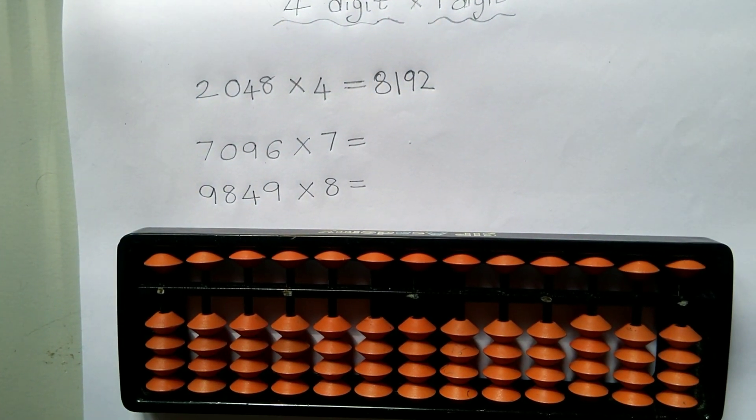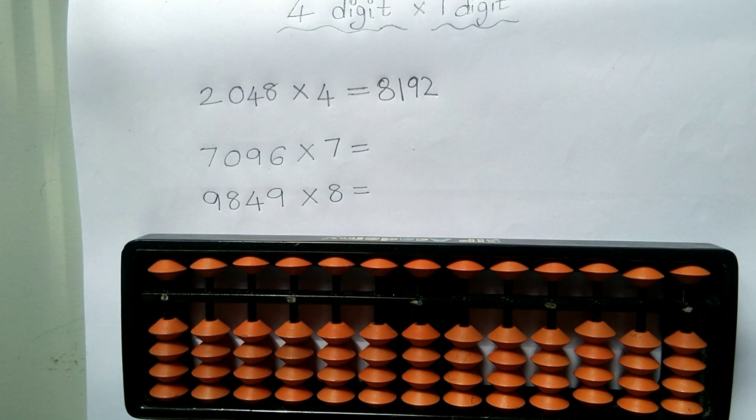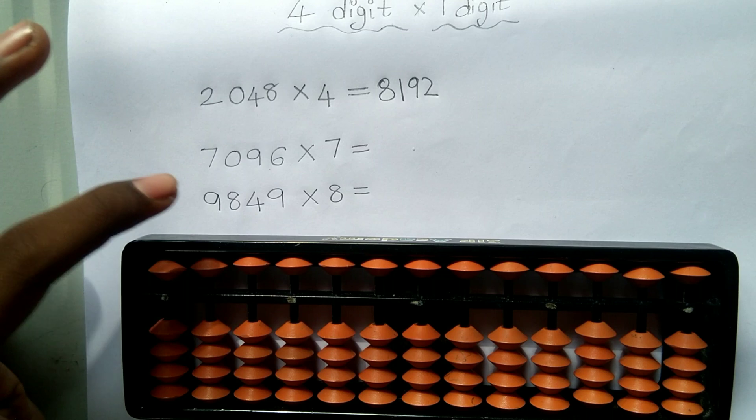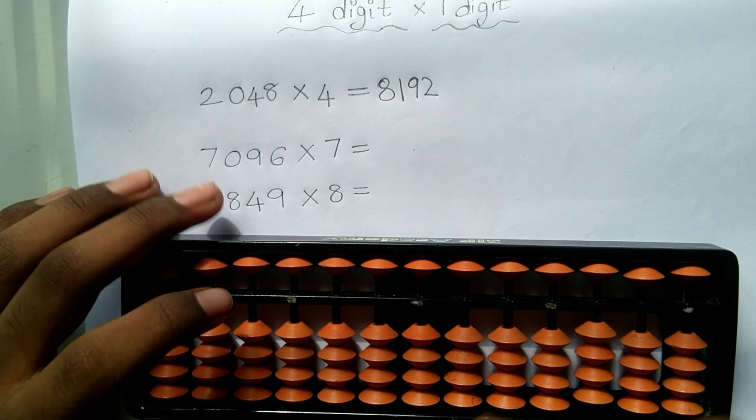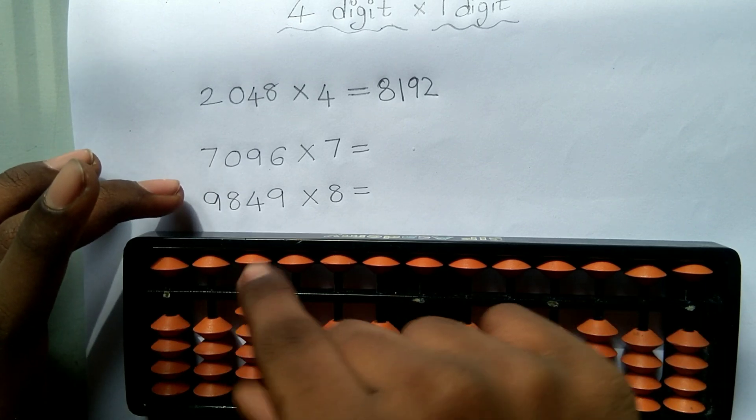And now let's do the second example. 7096 × 7. The first step is to multiply the first 2 digits with the second number. 70 × 7 is 490. So again, 1, 2, 3, 4, 5. 4, 9, 0.